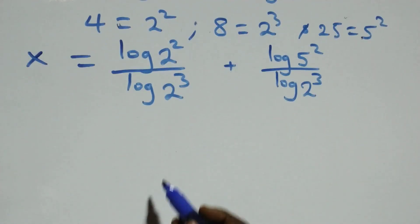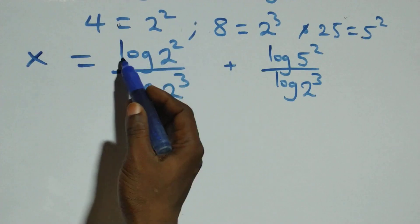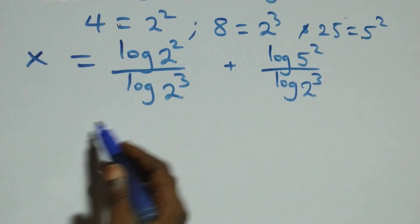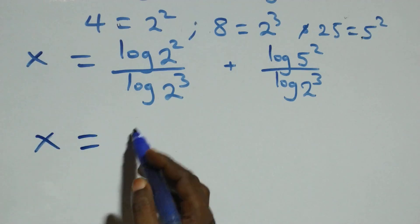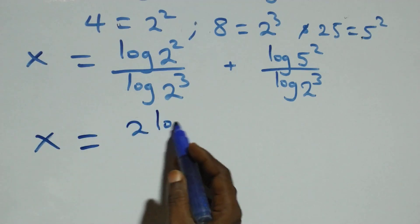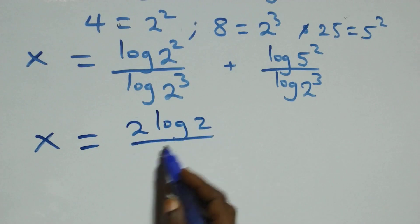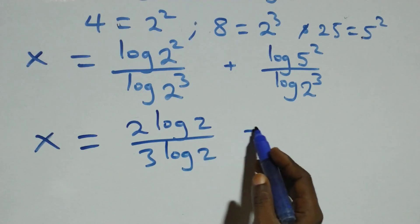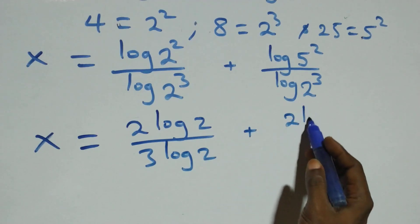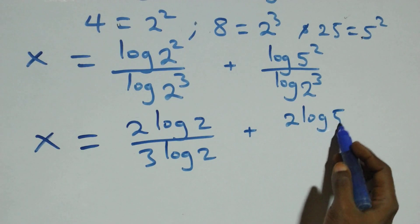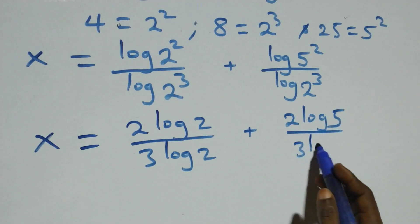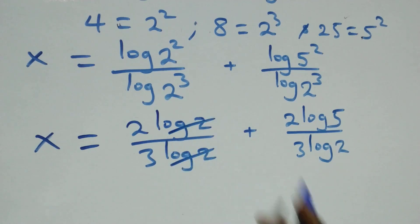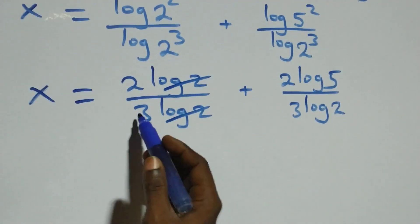Applying the power rule of logarithms, the 2 comes down here and 3 here; also 2 comes down and 3 here. We have x equals 2 log 2 over 3 log 2, plus 2 log 5 over 3 log 2. The log 2 terms cancel each other, leaving 2 over 3.